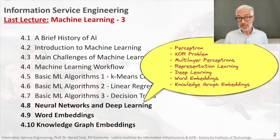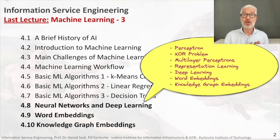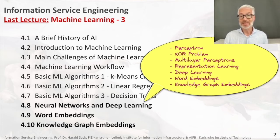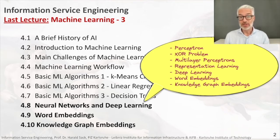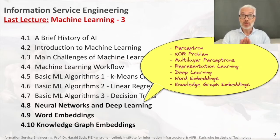This vector space keeps the original semantic properties of the words or the nodes, which means you can approximate operations like similarity by simply looking at the vector distance and choosing the closest vector with the minimum distance as the most semantically similar vector. This was Machine Learning Part 3.